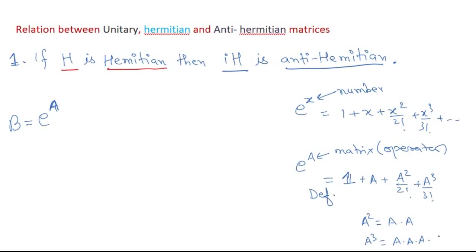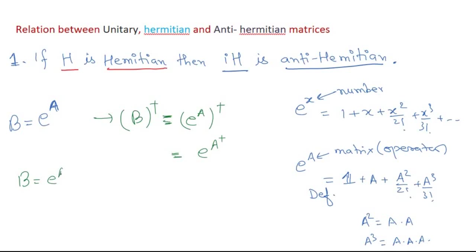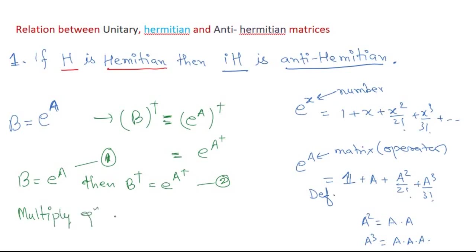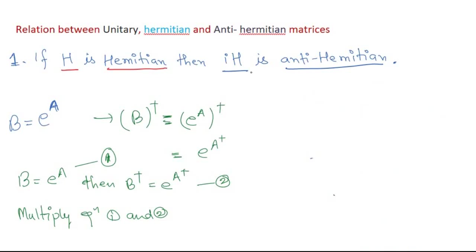So we define a matrix B = e^A for some matrix A. Now let us take the dagger of B. From the definition, B† = e^(A†). So: if B = e^A, then B† = e^(A†). Let me call these equation 1 and equation 2. Taking the product of equations 1 and 2: B·B† = e^A · e^(A†).